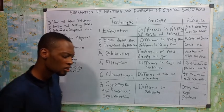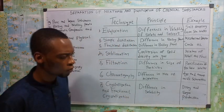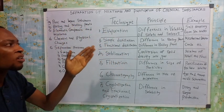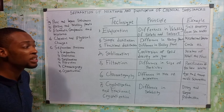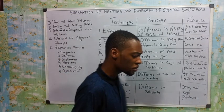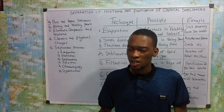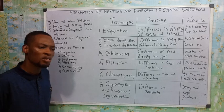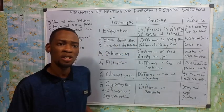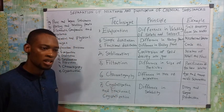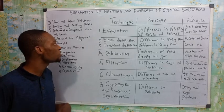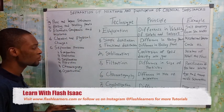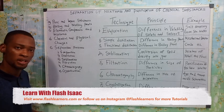A typical exam question: what separation technique is used in gin-making to produce alcohol? Since alcohol and water are mixed, the best separation method is simple distillation. Another example: what technique separates a mixture where one substance sublimes and the other does not? The answer is sublimation. Also, a substance that contains two or more elements chemically combined is called a compound.